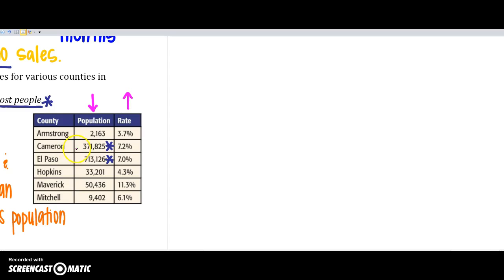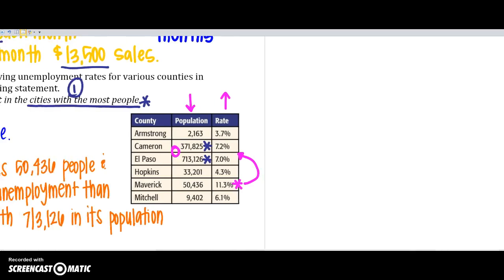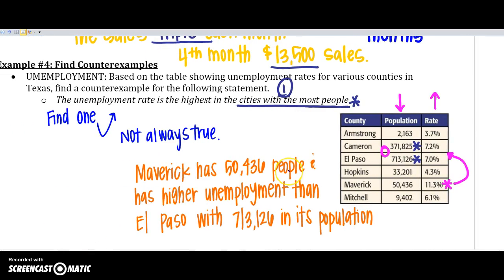Well, those are the two largest cities, but if you look down here, doesn't Maverick have more unemployment rate than El Paso and Cameron? So, because I found that, Maverick has 50,436 people and has a higher unemployment rate than El Paso that has way more people. So, because I found one city that doesn't fit that statement, this statement is not always true. So, my counterexample would be Maverick.